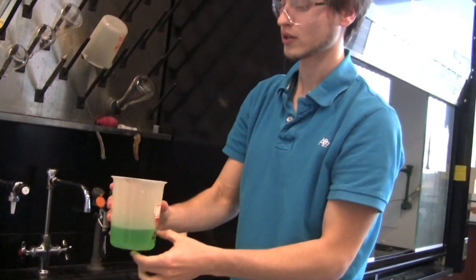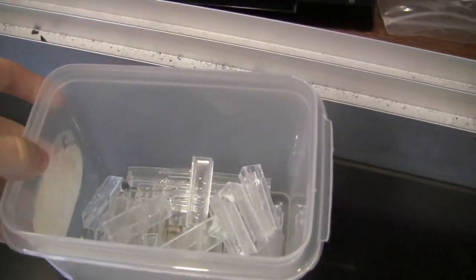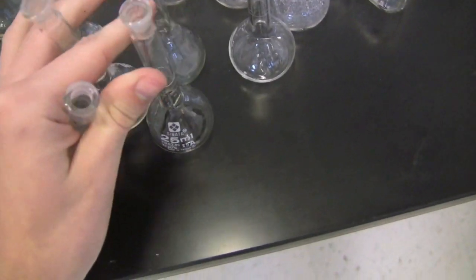Take your waste beaker and pour it into the heavy metal waste since it contains heavy metal. After putting up all your materials, including your volumetric flasks, wipe off the counter and make sure your area is completely clean.